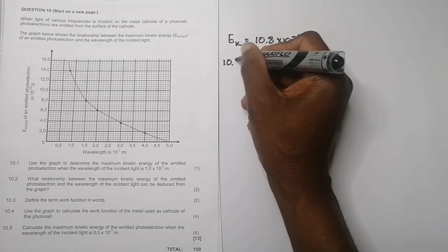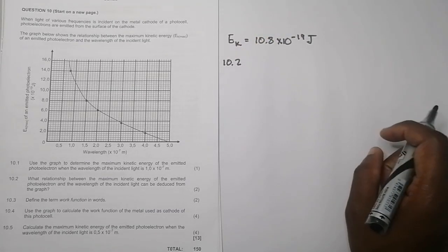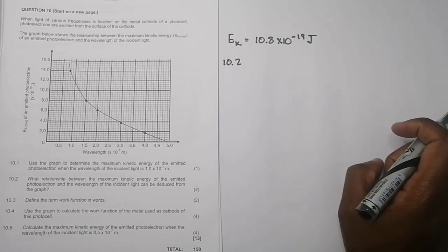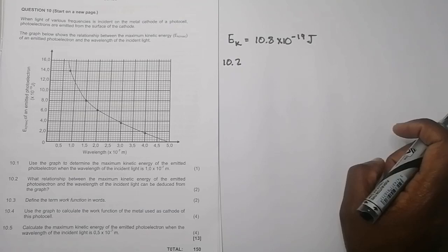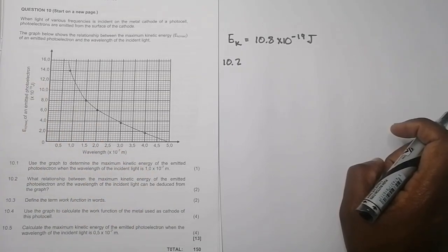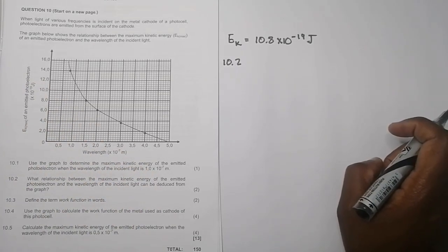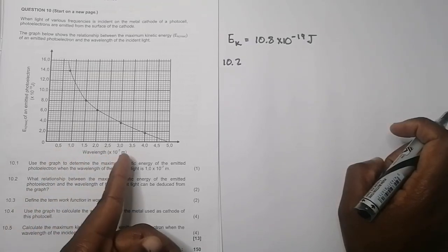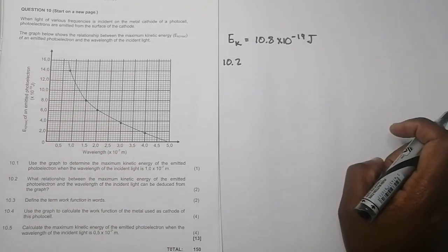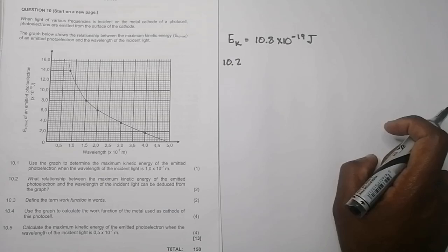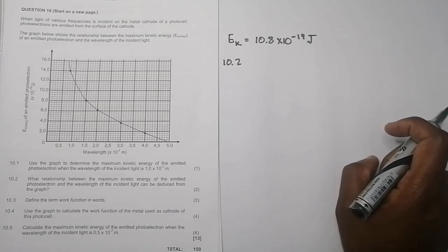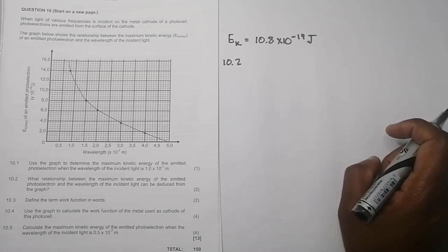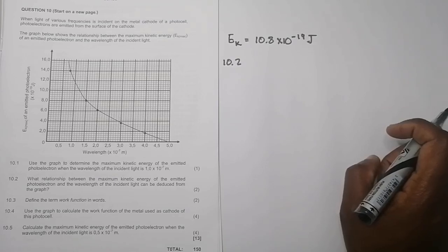And then 10.2, they say what relationship between the maximum kinetic energy of the emitted photoelectron and the wavelength of the incident light can be deduced from the graph? I think we can agree that they're inversely proportional to each other. In this case, the greater the wavelength, the lesser that maximum kinetic energy. So I would say they are inversely proportional to each other.